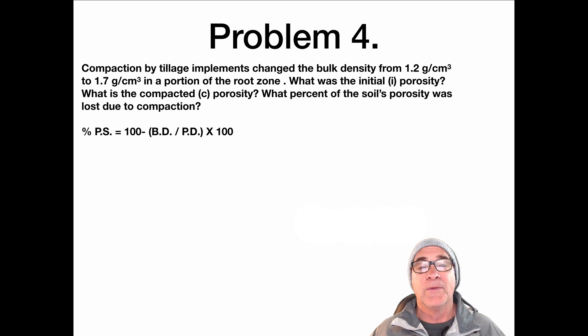So in problem number four, we're going to talk about compaction. How does compaction manipulate porosity? And the way we do that is, let's say for instance we have a soil, it's a clay kind of soil, it's 1.2 grams per cubic centimeter. That's in the clay range. And what would happen if, because of our implements and the way we managed our soil, our bulk density changed from 1.2 to 1.7 in the root zone? What would happen? How much porosity will we lose in this scenario?